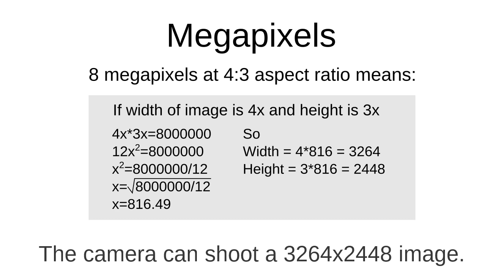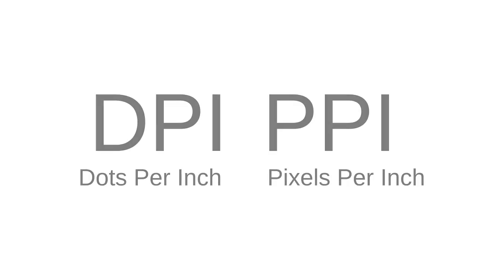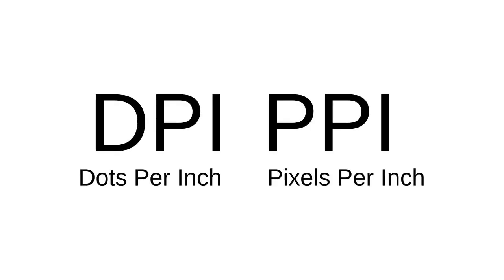Megapixels are just a unit used for shopping and comparing cameras. There is also DPI and PPI — dots per inch and pixels per inch. These terms refer to dots and pixels respectively, and the difference between them is minimal.